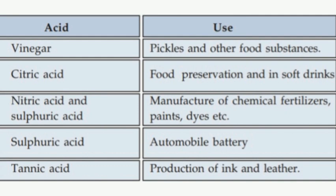What are the uses of acids? We use vinegar and citric acid in pickles and other food substances for food preservation and soft drinks. We use sulfuric acid in chemical fertilizers, paints and dyes, and in rubber factories. Organic acid is also used.